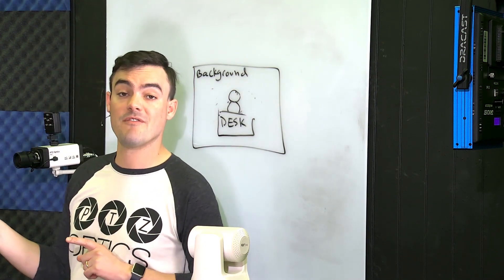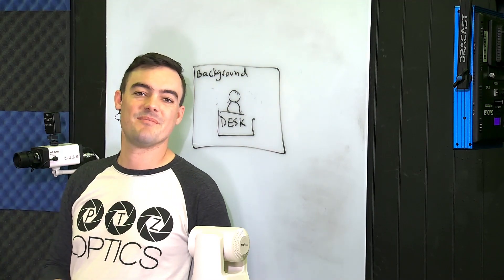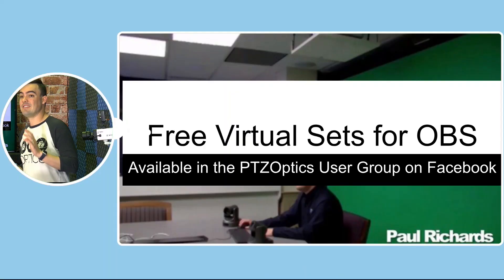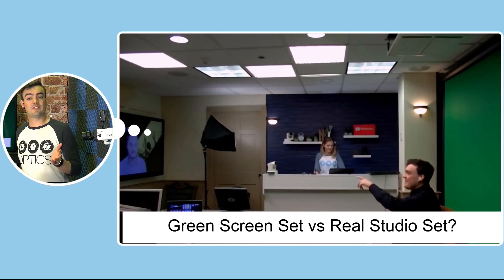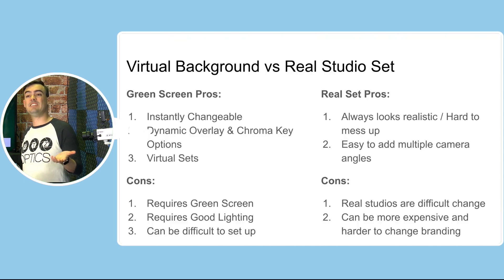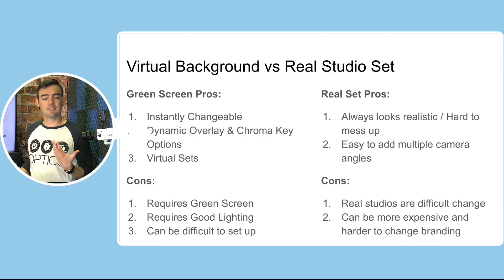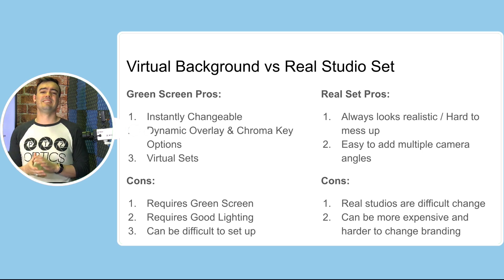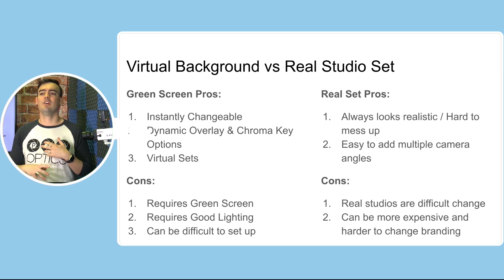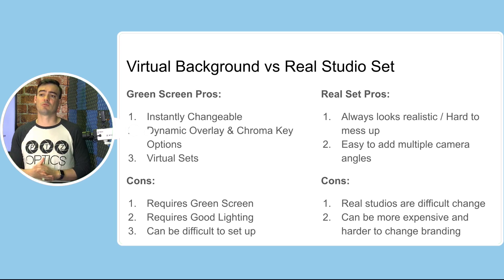Let me show you some things you should know about virtual sets and then I'll show you how to set it up in OBS. We've got tons of free virtual sets for you guys to play around with. Something to think about: are you best served with a virtual set or should you create a real studio? Green screens are great because you can instantly change where you are and create dynamic overlays, chroma keys, and virtual sets. You can also overlay yourself on top of a presentation, which is awesome.